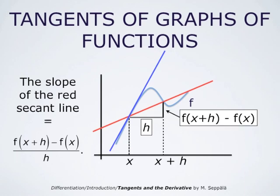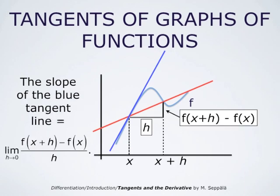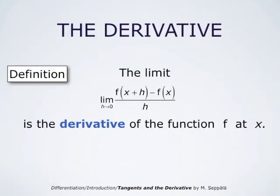This means that the tangent of the acute angle that the red line makes with the x-axis is f at x plus h minus f at x divided by h. So this is the slope of the red secant line. Then we take a limit — we let the other intersection point approach the first one, meaning we let h go to zero. So the slope of the blue tangent line is the limit as h goes to zero of the quantity f at x plus h minus f at x divided by h. The definition of the derivative of a function f at the point x is that the derivative is this same limit as h goes to zero.